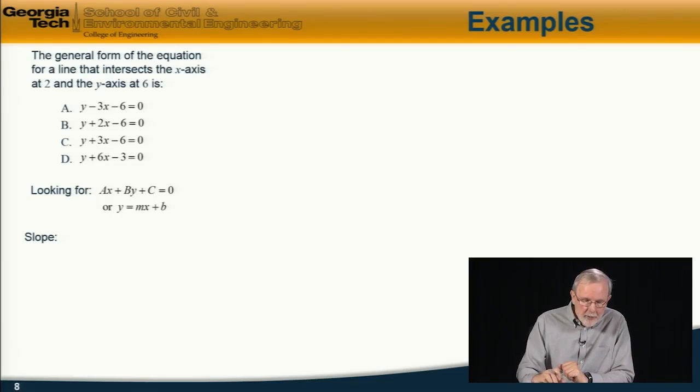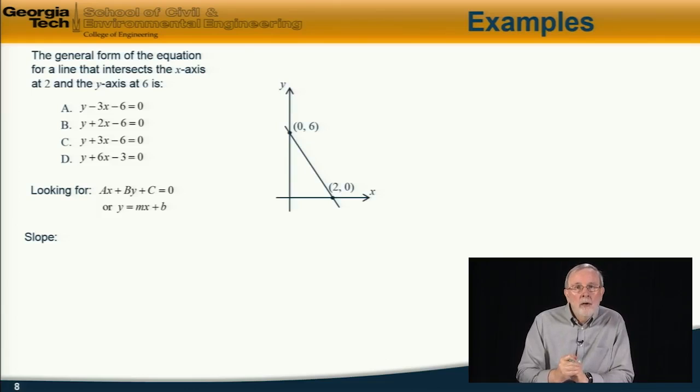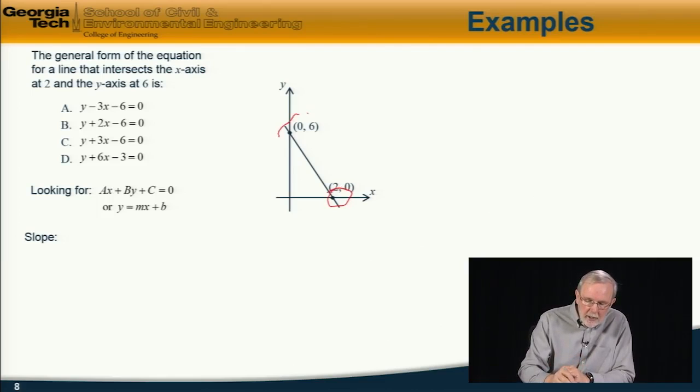And we can compute the slope. So, here is the picture. The line intersects the x-axis at 2, in other words a point which has coordinates of (2, 0), and the y-axis at 6, in other words a point which has coordinates of (0, 6).